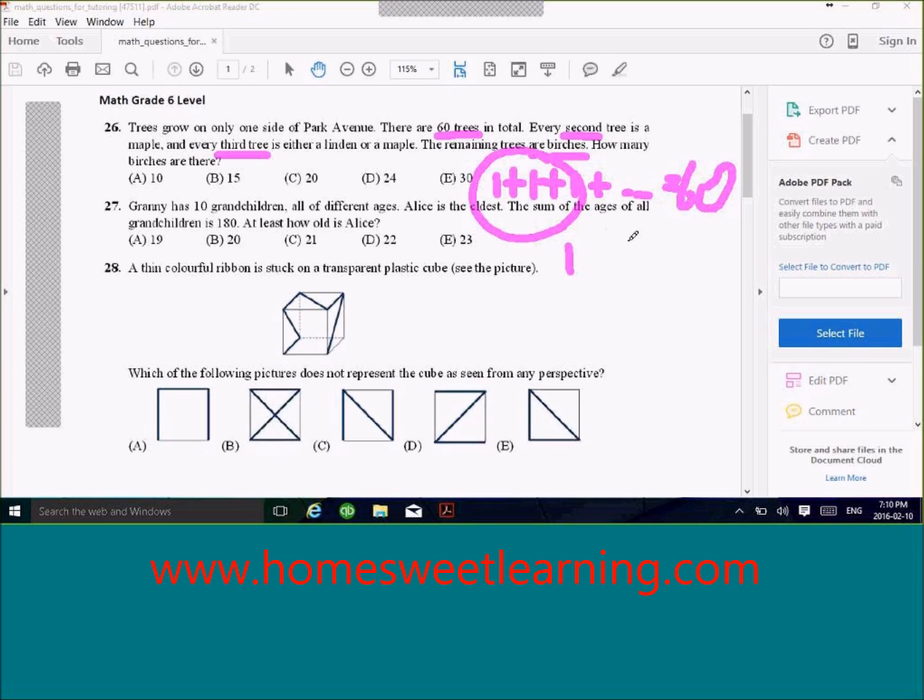So then you use 60 divided by 3, and this will give you the total number of groups, which is 20. So that means there are 20 birches.